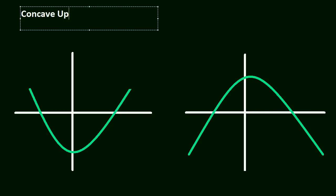The function has a property called concave up. And over here, if it looks like this, then it's concave down.